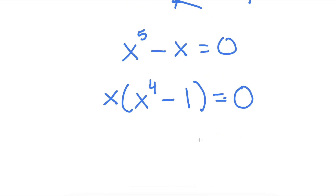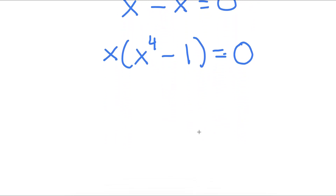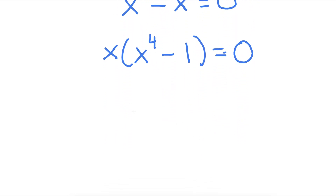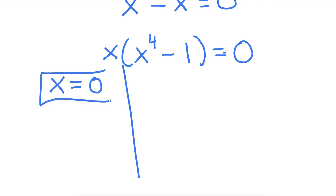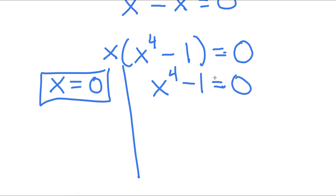This is going to give me two equations. My first is x equals 0, which is a solution — so I have one solution for x already. My second equation is x to the power of 4 minus 1 is equal to 0.